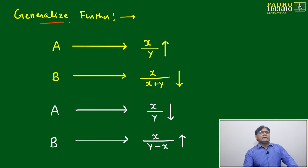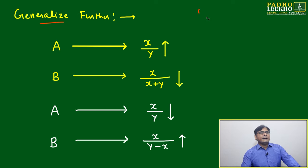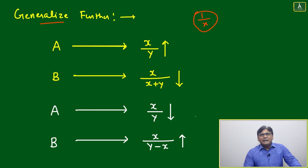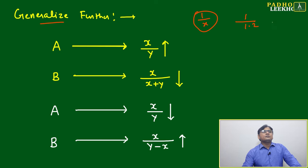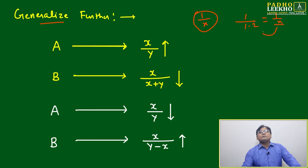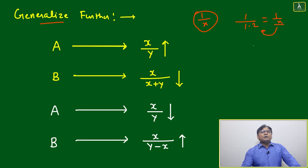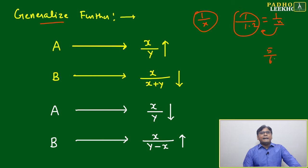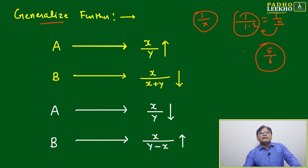We can further generalize for more comfort. So far we've expressed things in the form of 1/x, but sometimes numbers are difficult to express that way. For example, 1/1.2 — here x is in decimal format and conversion becomes difficult. Instead, we can write 1/1.2 in the form of 5/6.